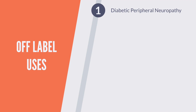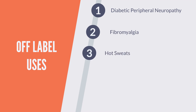Interestingly, one of the most common uses of gabapentin — the management of diabetic peripheral neuropathy — is actually not an FDA-approved use; it is an off-label use. Off-label use means the medication was not necessarily studied for that condition, but over the years it was found to help, and based on the doctor's experience they may prescribe it for that condition.